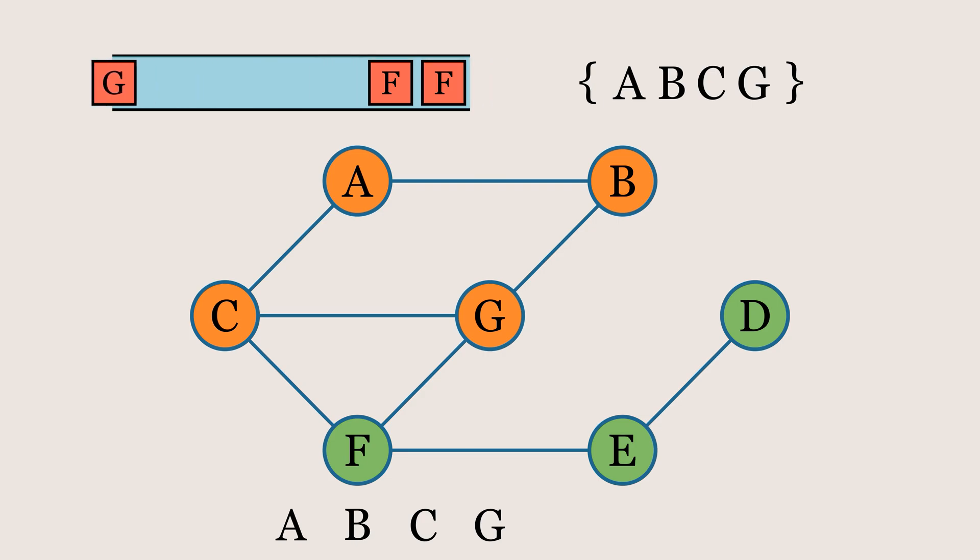Next, we pop the element from the queue again. This time, the element is already visited, so we'll skip it and move on to pop the next element. We'll check if the element is visited. If it's not, we'll add it to the visited set, print it, and insert its unvisited neighbors into the queue.